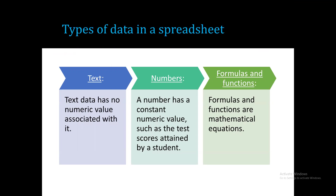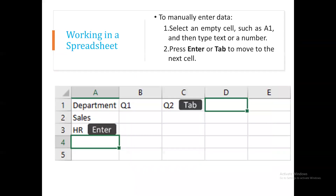In Excel you can do text data entry, number data entry, and formulas. For example, you can type in a cell and press Enter to move down, or press Tab to move to the next column to the right.